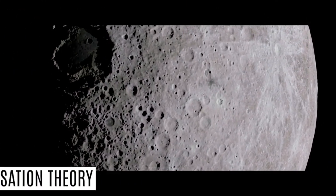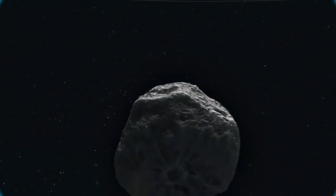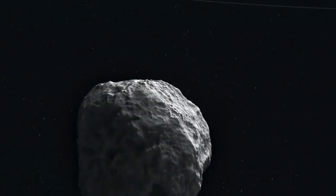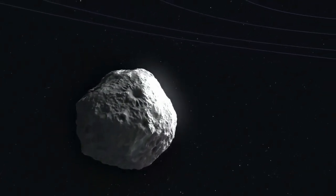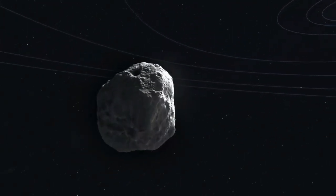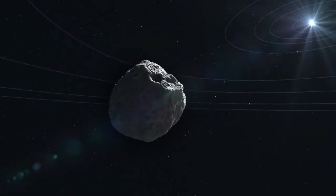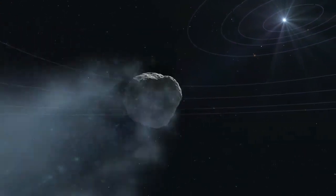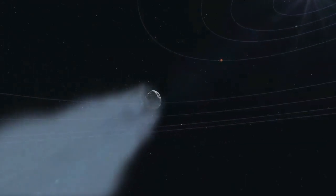The next theory is the Condensation Theory, which says that the Earth and the Moon were created very near each other and out of the same material, so the Moon would naturally orbit the Earth. The problem is that if they were both created out of the same material, they should have the same composition — meaning the Moon should also have an iron core like the Earth does, but it doesn't. Also, like the Fission and Capture theories, the Condensation Theory doesn't naturally explain how the Moon received that extra baking.